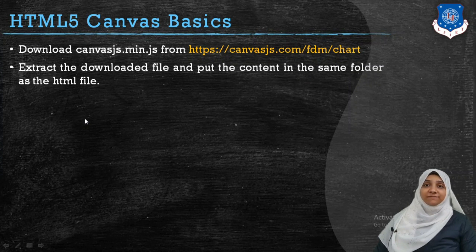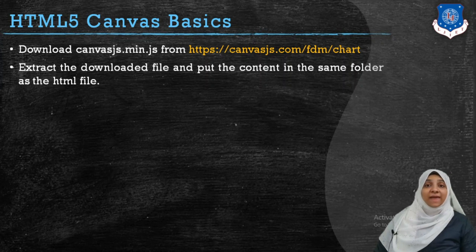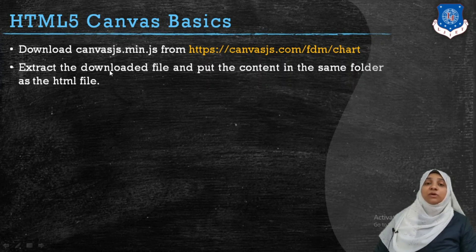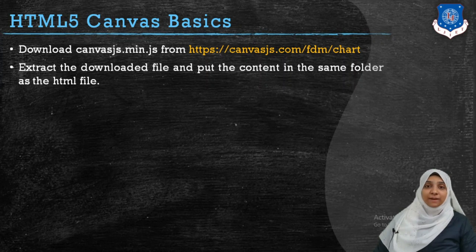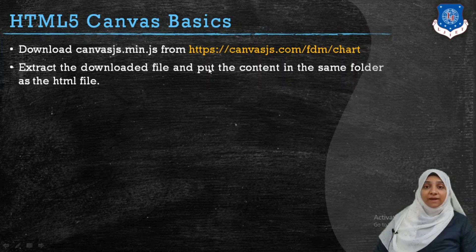Now let us start with how to use the CanvasJS library in your page. The very first step is to download the CanvasJS library from the canvasjs.com website. You have two different options: you can either include the canvasjs.min.js library from the URL itself, or you can download and store it inside your computer. Any option will do, but we will go with the downloaded version. From this website, you can download the canvasjs.min.js file and extract it to the folder where you are going to store your HTML web page.